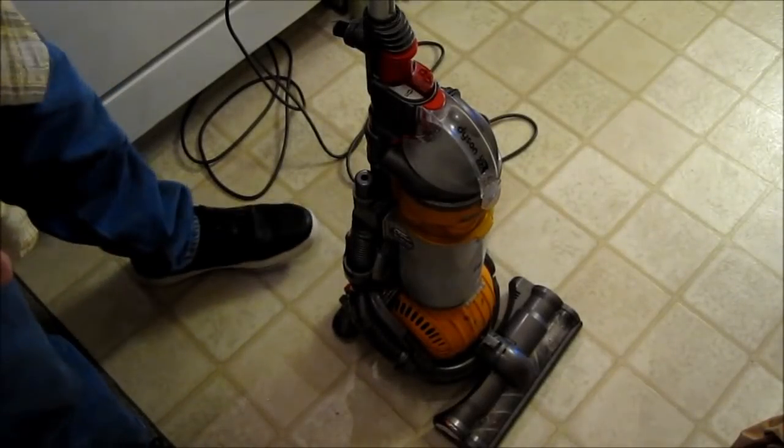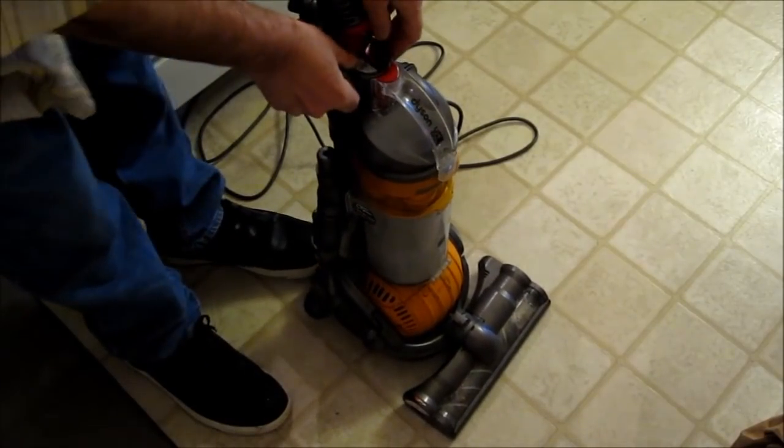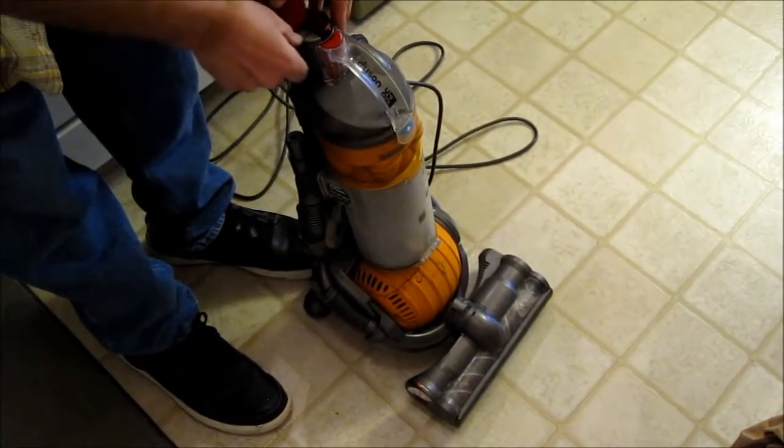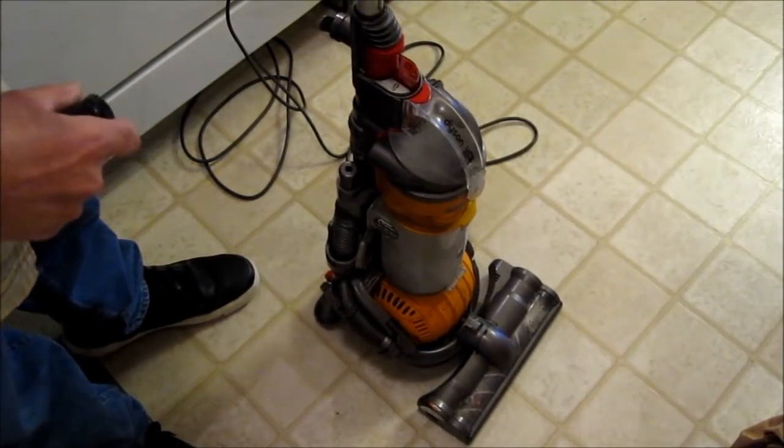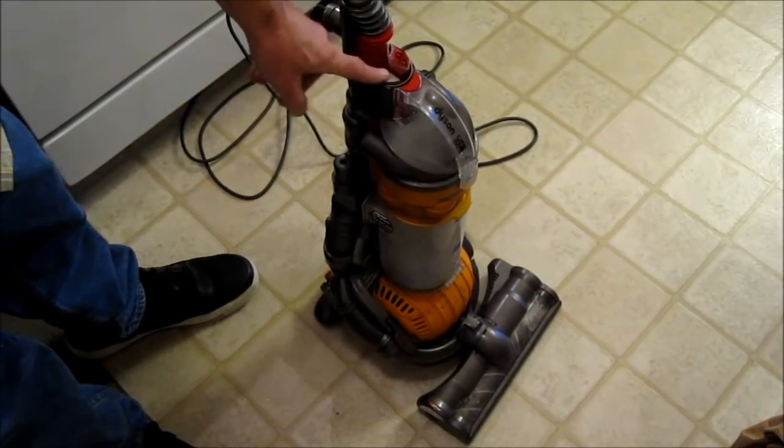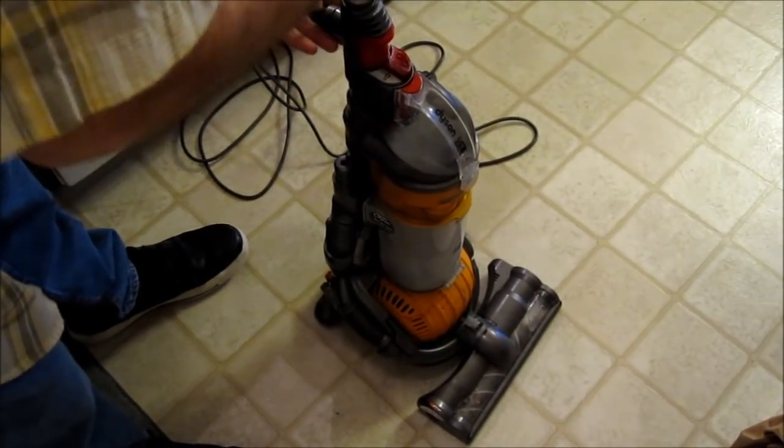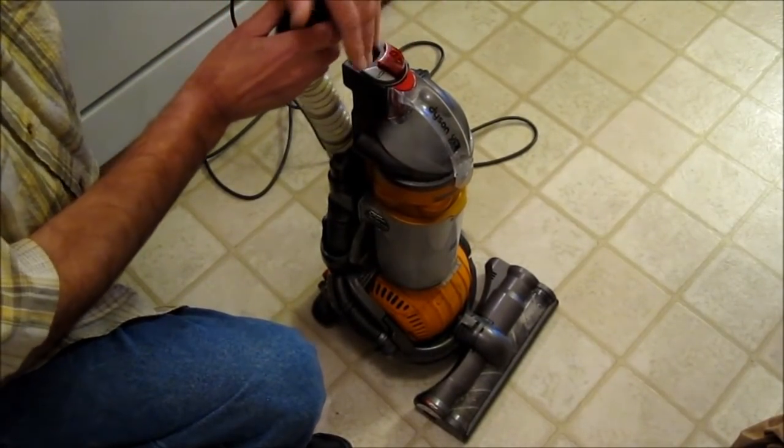Okay, the Dyson machine. I'm going to start it up. I know that the beater bar isn't working. This switch here is the issue. So I'm going to have to take it apart for the switch, and also there's no suction coming out of here. There's nothing out of there.